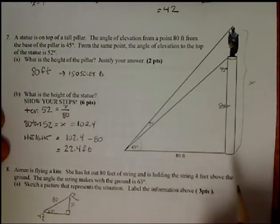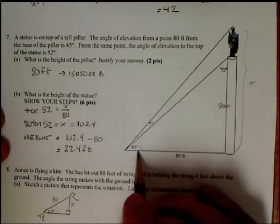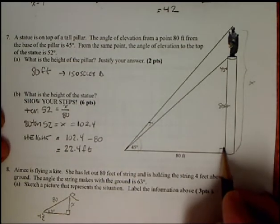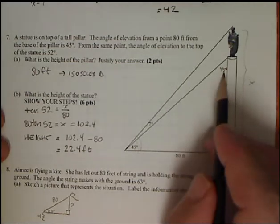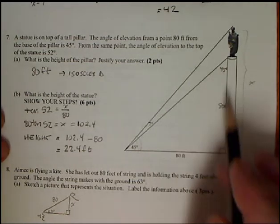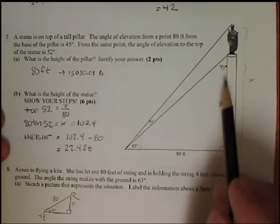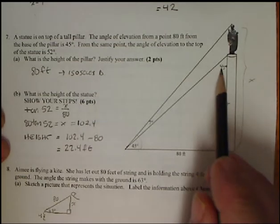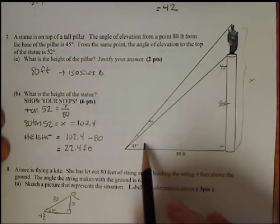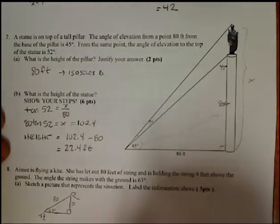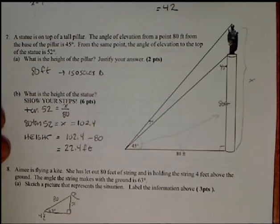It asked what the height of the pillar was. Well, we don't even need to use trig for this. If this is 45, we have a 90 degree angle here. This is 45 then because the sum of the angles in the triangle have to add up to 180. This is an isosceles triangle. So this side is congruent to this side. So they're going to have the same length. So the pillar is 80 feet.